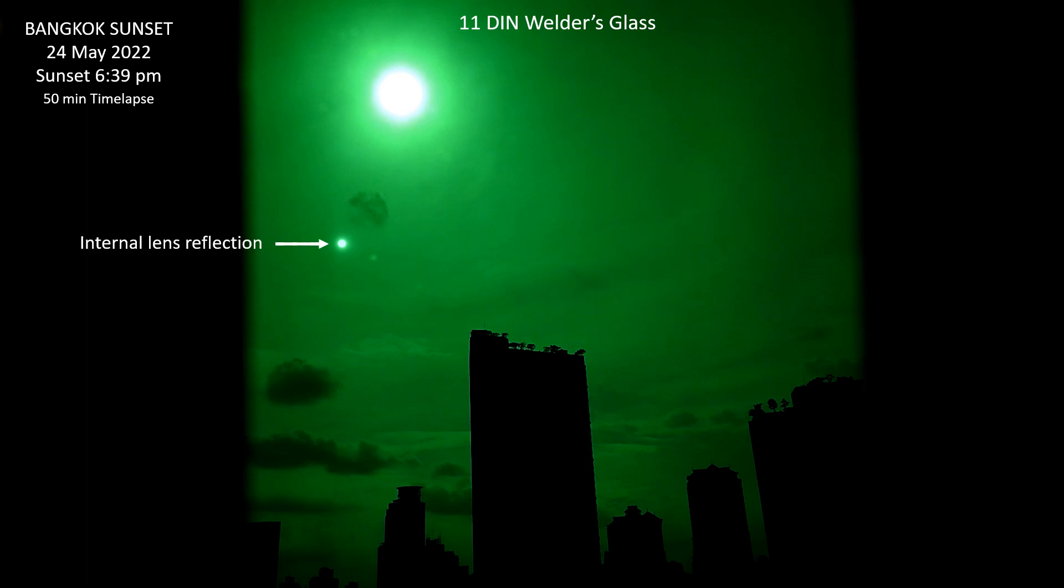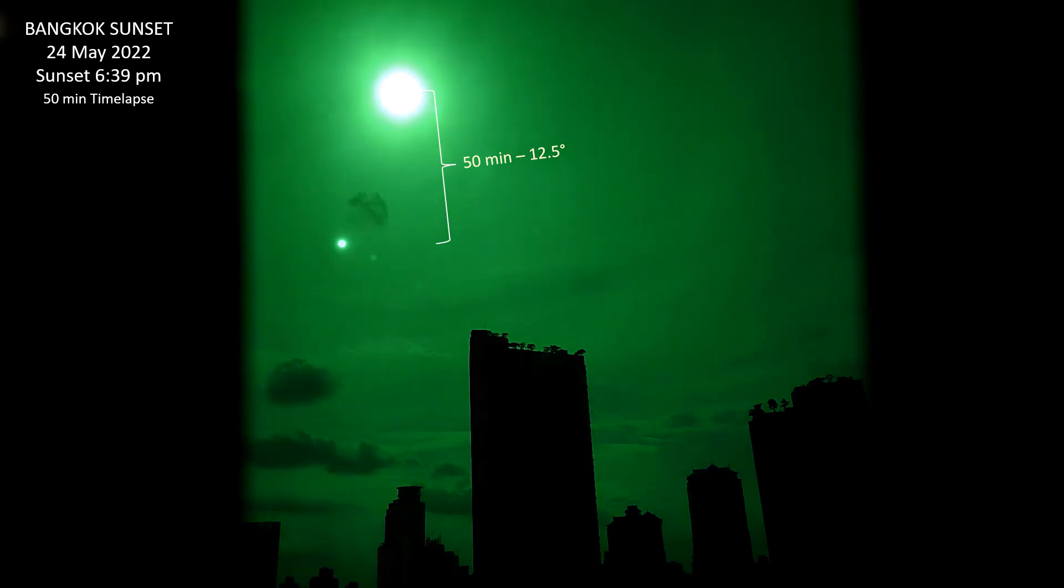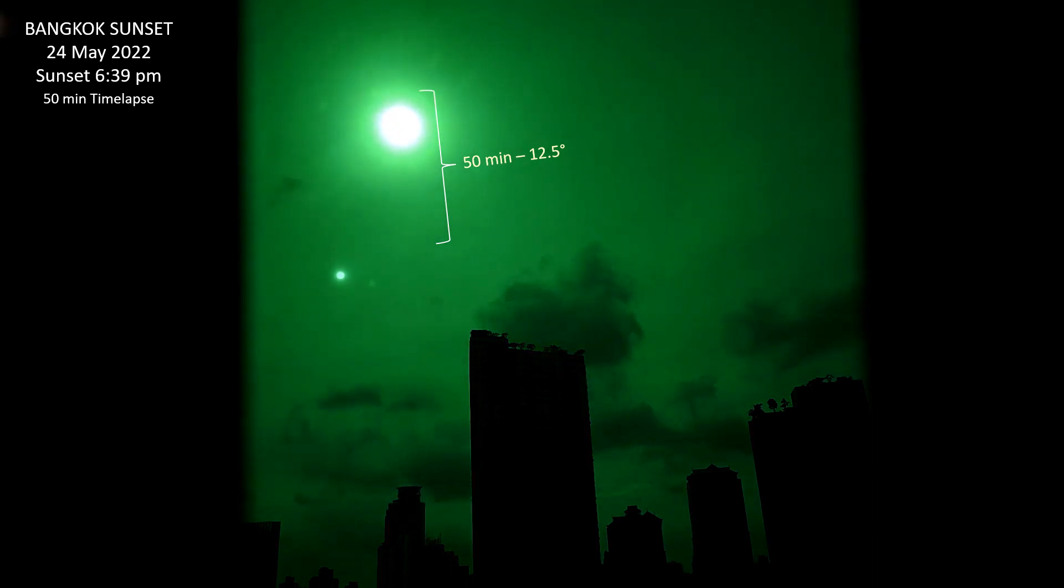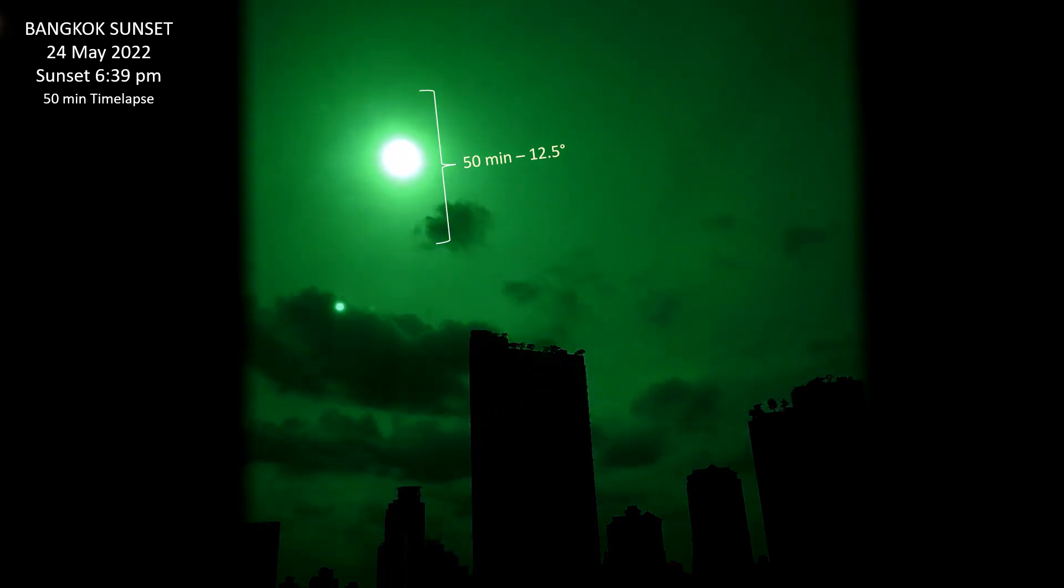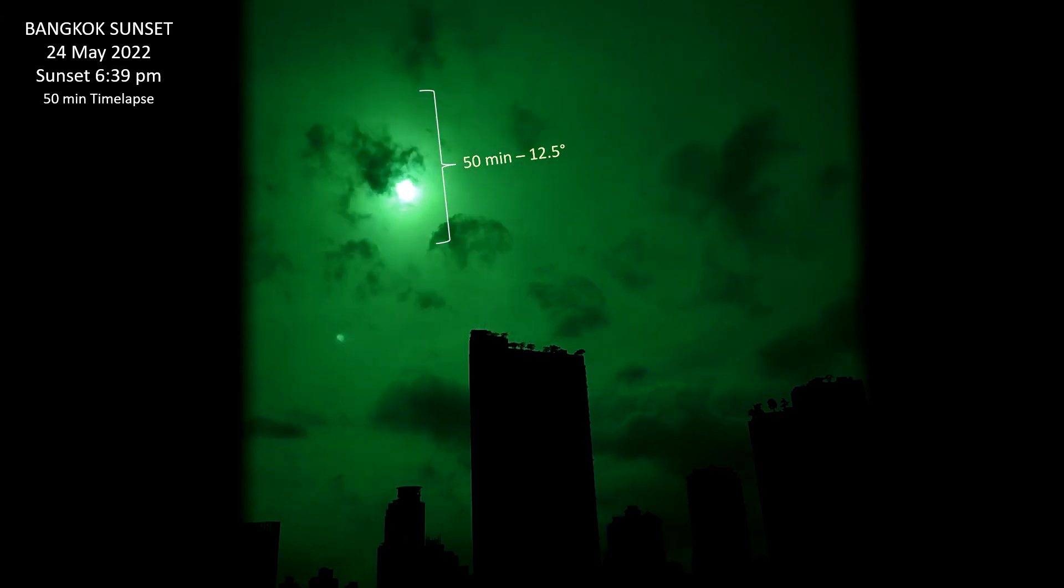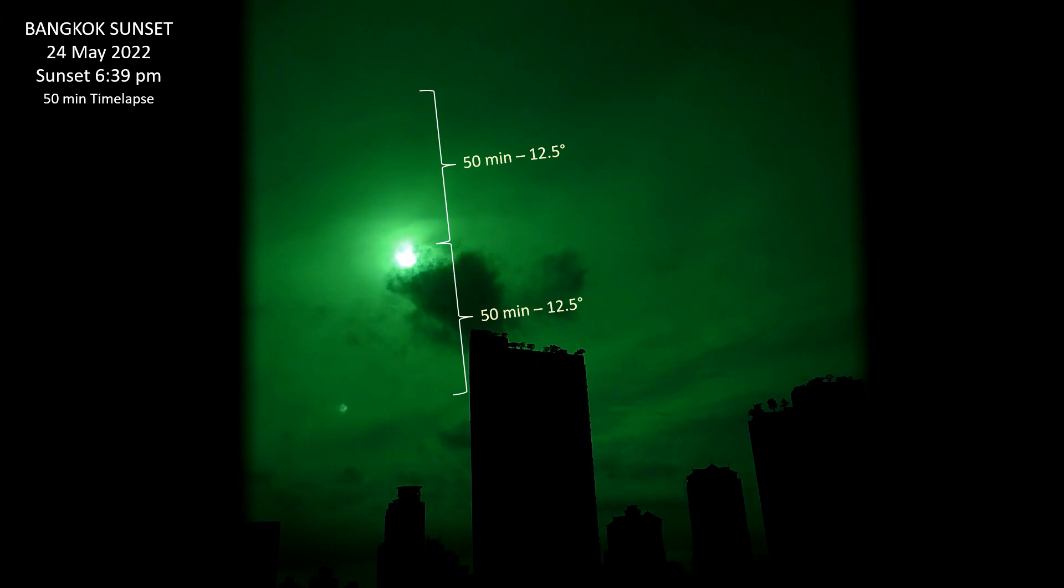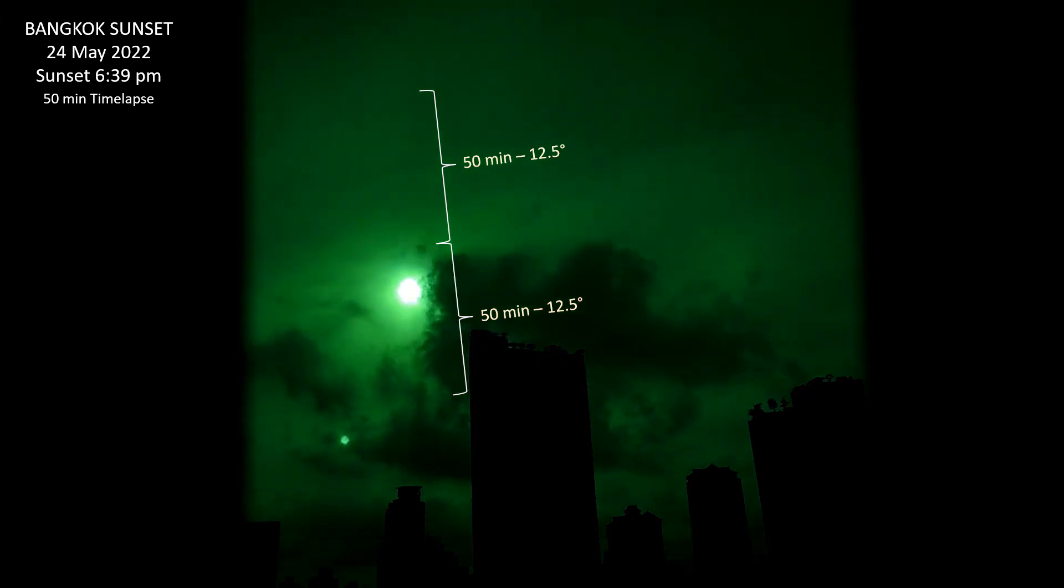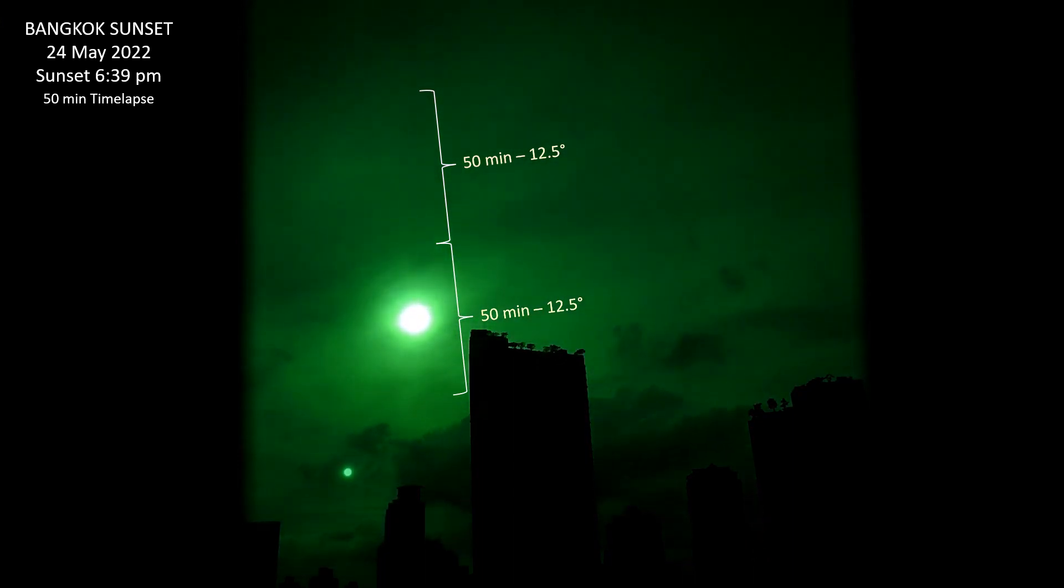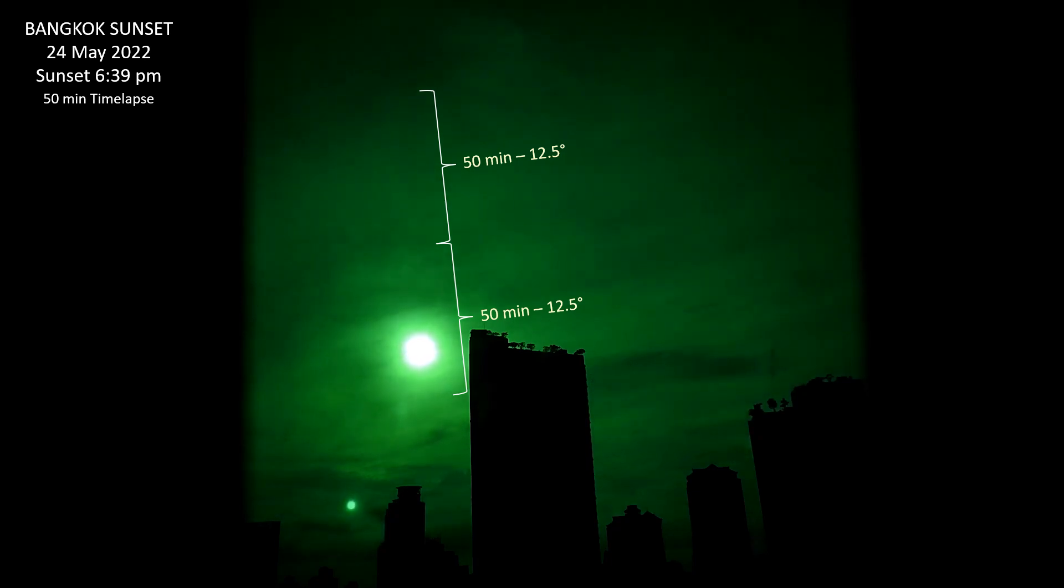And this is not a second Sun, it's just an internal lens reflection. And this is how far we'll see the Sun travel in 50 minutes. Now the first thing you'll notice is that the Sun sets at a very steep angle here and that's because I'm about 900 miles north of the equator. Now I start at this time-lapse as soon as that other time-lapse is finished. So here is the second 50 minutes.